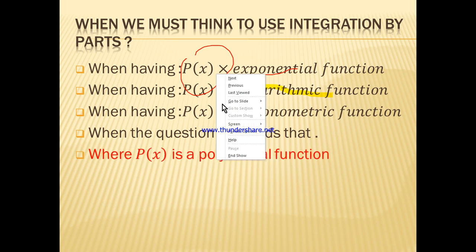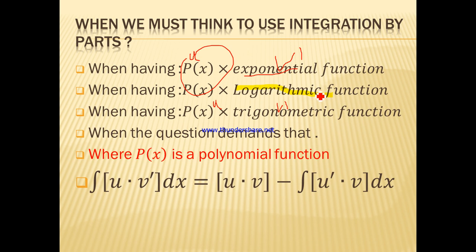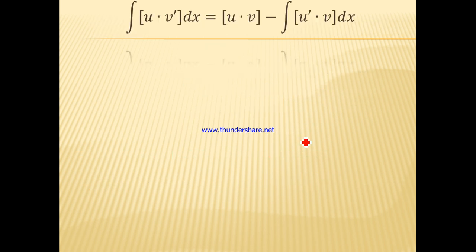Here p(x) is a polynomial function. For p(x) times an exponential function, we take p(x) as u and the exponential function as v'. The same applies for polynomial times trigonometric function: p(x) is u and the trig function is v'. But for the logarithm case, we take the logarithm as u and the polynomial as v', because the integral of a polynomial is easier than the integral of a logarithm function.